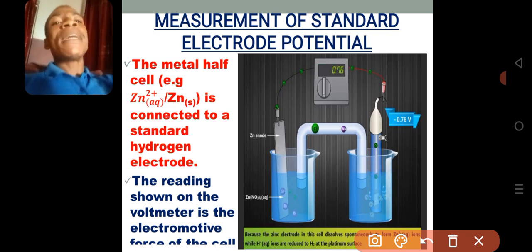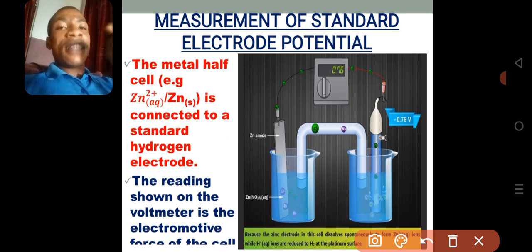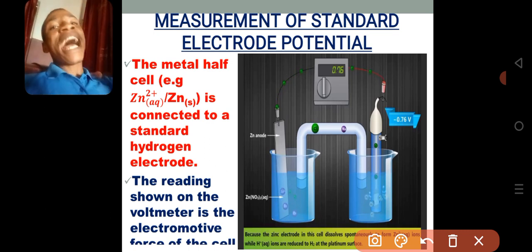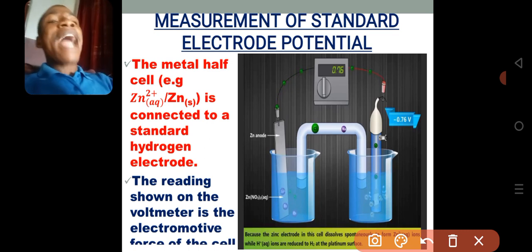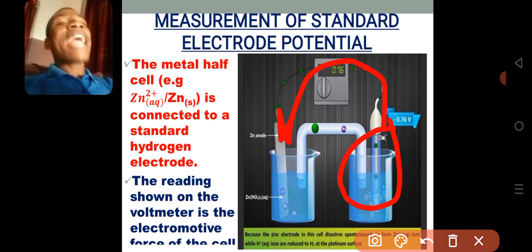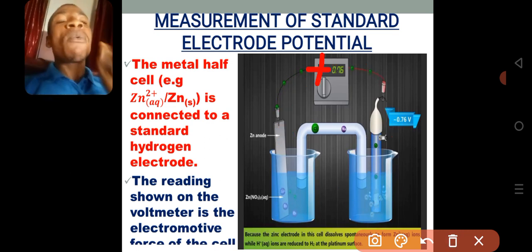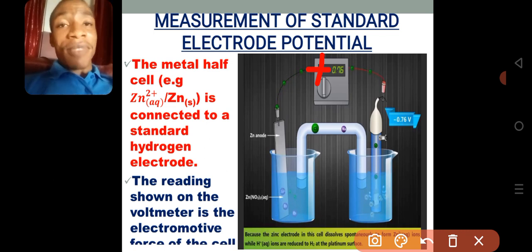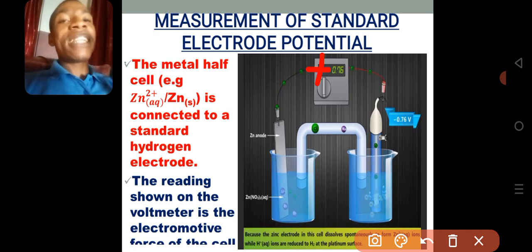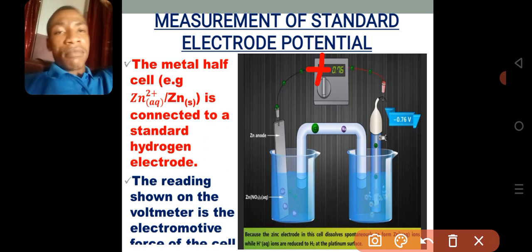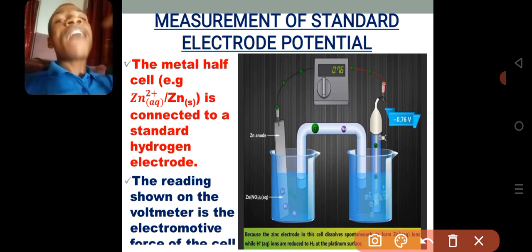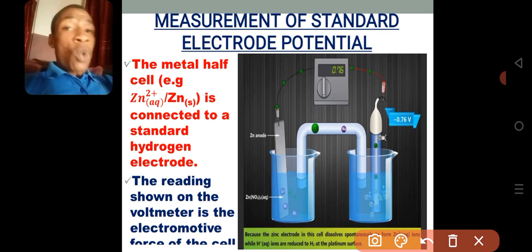But when you connect a metal that is lower than hydrogen in the electrochemical series to the hydrogen electrode, then electrons will flow from hydrogen to that metal half cell. Whenever electrons flow from the hydrogen electrode to the metal half cell, the sign of the electrode potential will be positive. So if you see a positive electrode potential, that metal is lower than hydrogen in the activity series. If it is negative, the metal is higher than hydrogen and electrons flow from the metal to hydrogen.